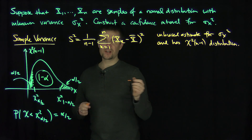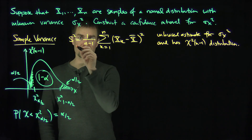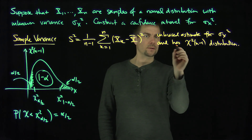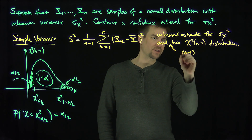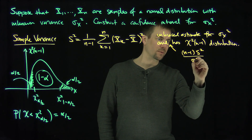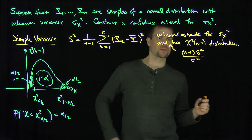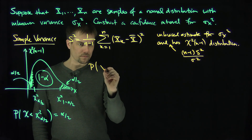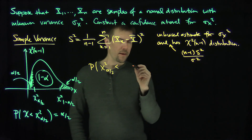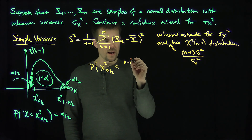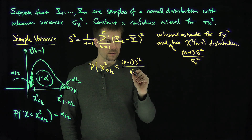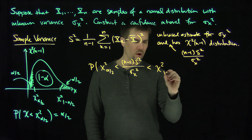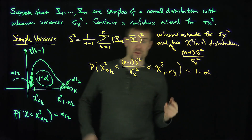Now we can write a probability statement. We know the quantity n minus 1 times S squared over sigma x squared has a chi-squared n minus 1 distribution. Therefore, the probability that chi-squared alpha over 2 is less than n minus 1 S squared over sigma x squared, which is less than chi-squared 1 minus alpha over 2, equals 1 minus alpha. There's our confidence interval setup.